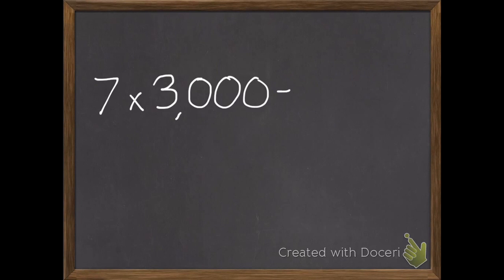Second example, seven times three thousand. So my basic fact is seven times three, which is twenty-one. Then I have three zeros, so I add three zeros.